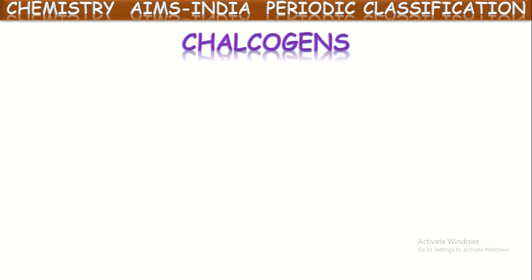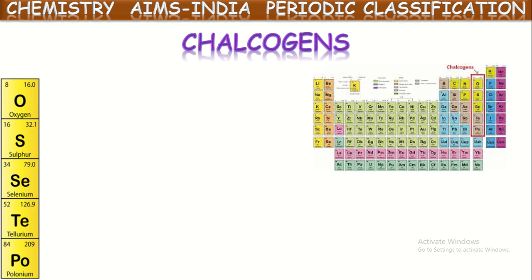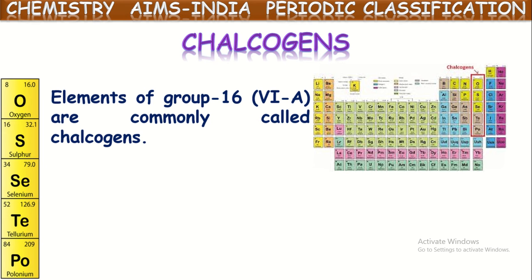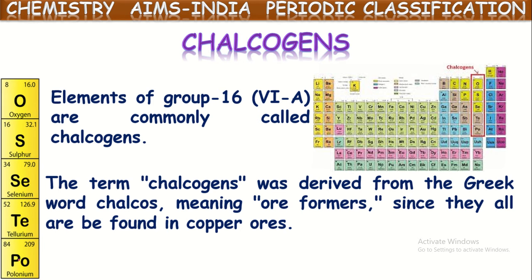Among them, one is Chalcogens. The 16th column or 6A group elements present in the modern periodic table are called Chalcogens. Those elements are oxygen, sulfur, selenium, tellurium and polonium — the third column from the extreme right. These elements present in the 16th group or 6A group are commonly called Chalcogens. The term Chalcogens was derived from the Greek word 'Chalkos' which means ore formers.